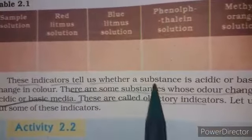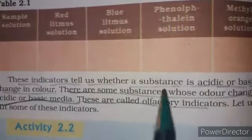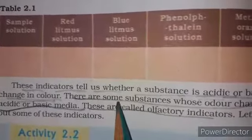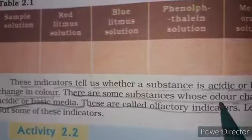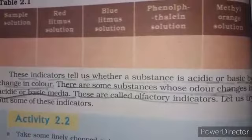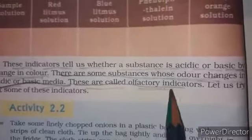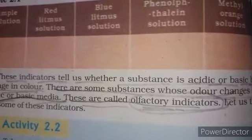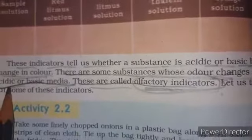Indicators tell us whether a substance is acidic or basic by change in color. There are also substances whose odor changes in acidic or basic media — these are called olfactory indicators. When the smell changes, we can predict whether the substance is acidic or basic.